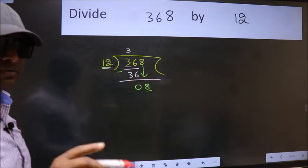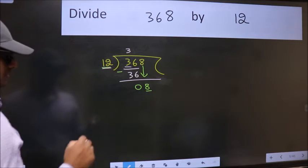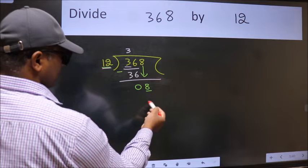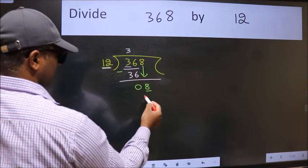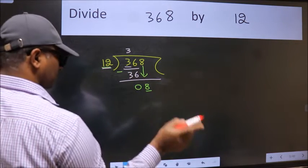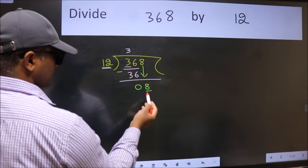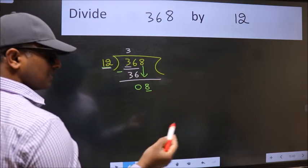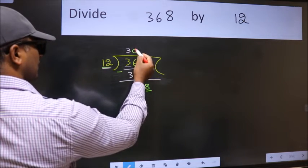Instead of that, what we should think of doing is, which number should we take here? If I take 1, we will get 12. But 12 is larger than 8. So what we do is, we take 0 here.